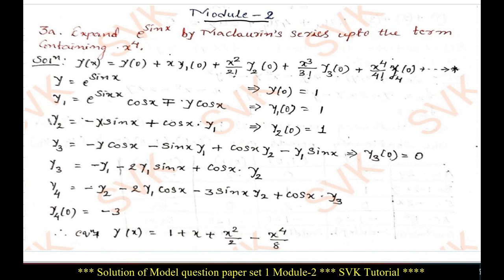In module 2, the given question is: expand e^(sin x) by Maclaurin series up to the term containing x^4. First of all, we should write down the Maclaurin series expansion. It is y(x) = y(0) + x·y1(0) + (x²/2!)·y2(0) + (x³/3!)·y3(0) + (x⁴/4!)·y4(0). As they have asked for x^4, we are expanding up to x^4. Name this as equation star.